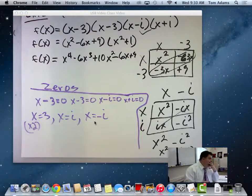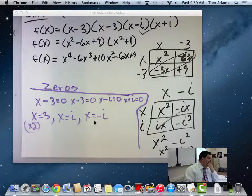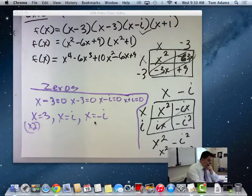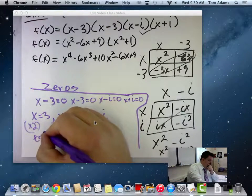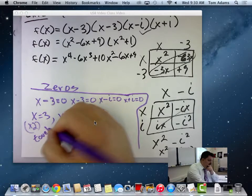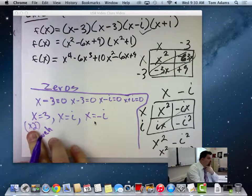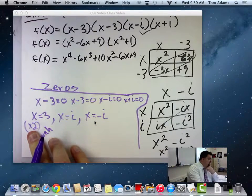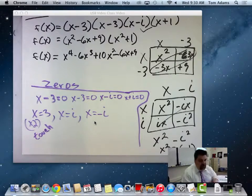Now, does anybody remember a couple sections ago we said that when you have an even multiplicity, does anybody remember what that graph looked like? This is going to touch the x-axis, but it probably won't cross. If it was an odd multiplicity, it would cross through the x-axis.